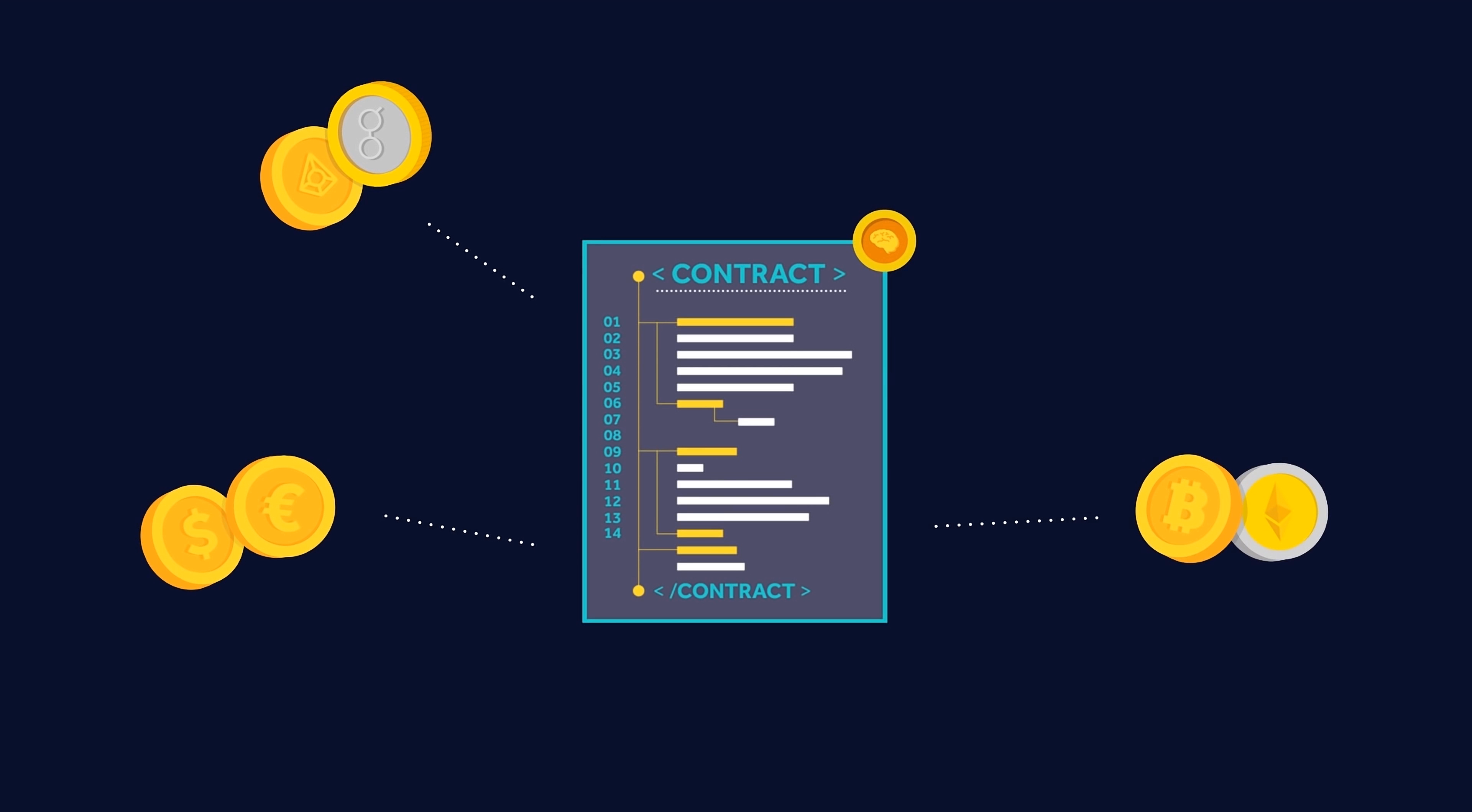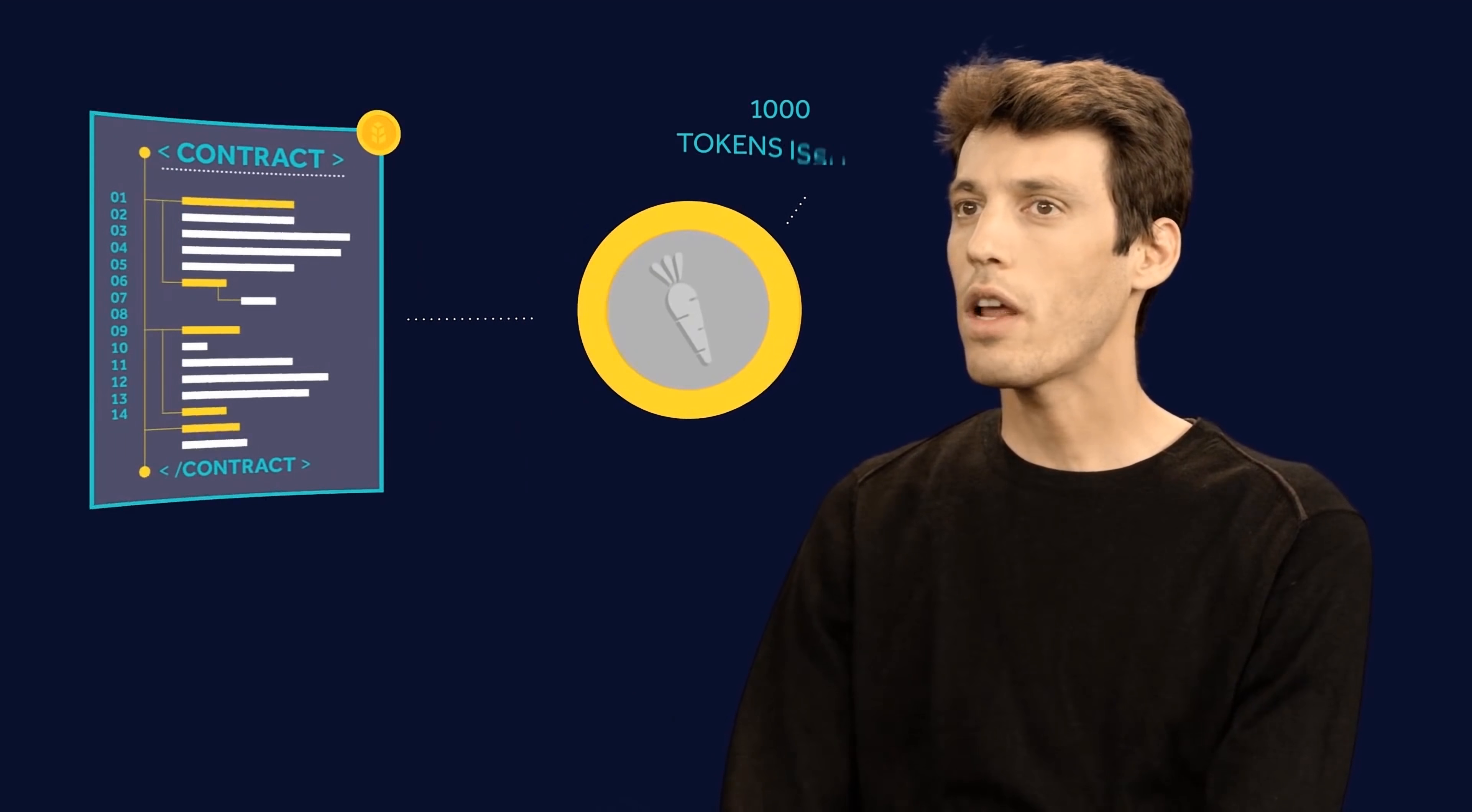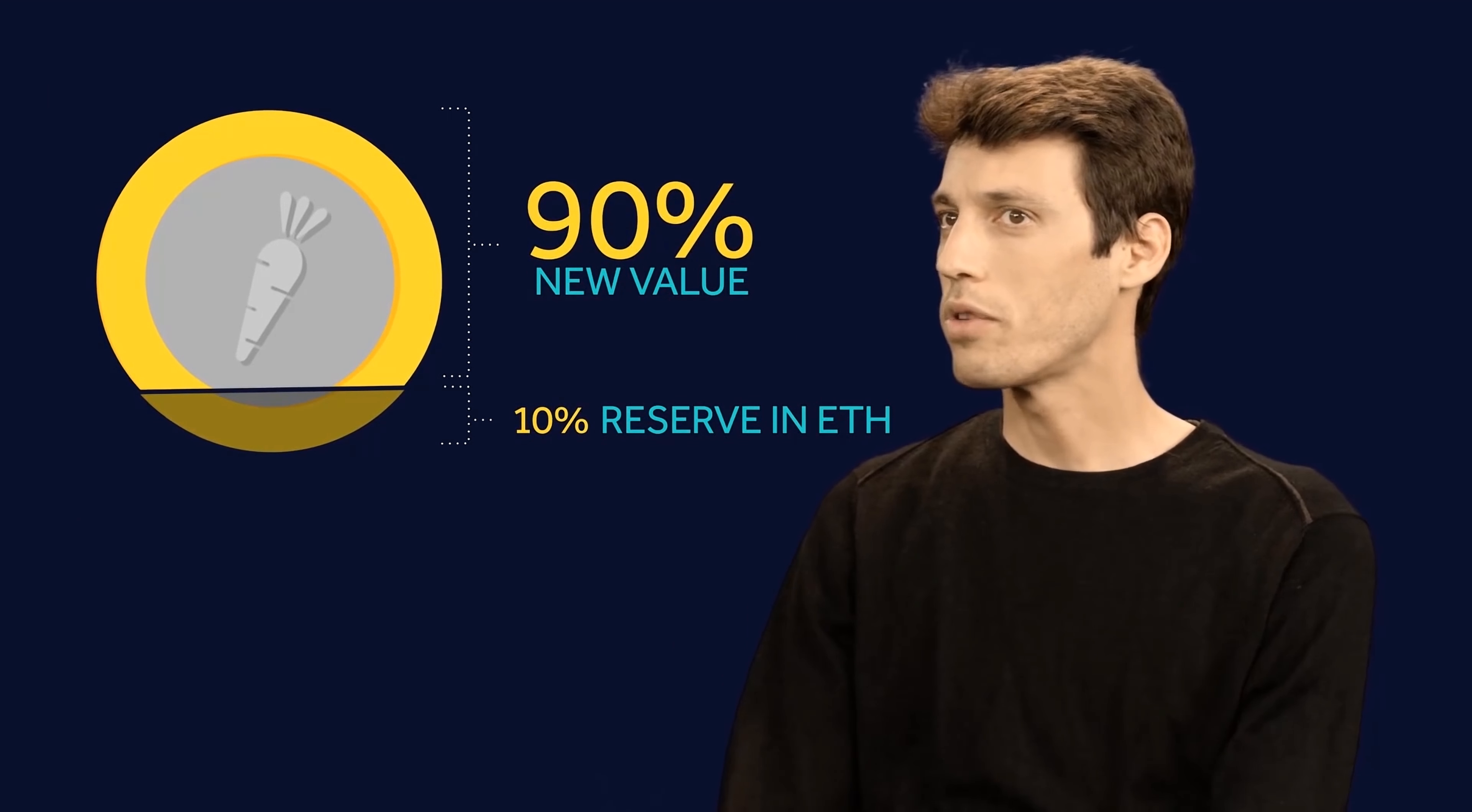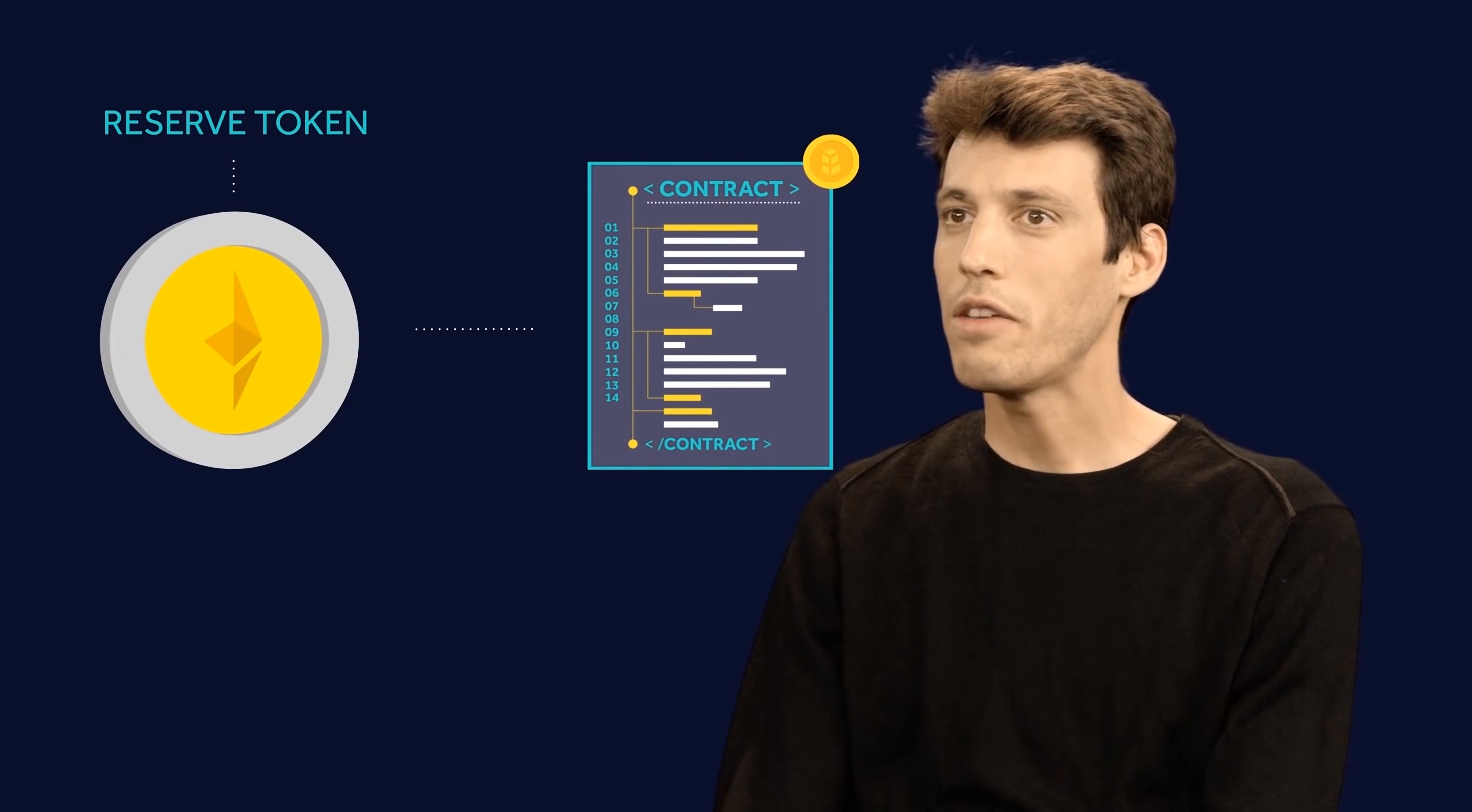Tokens represent assets like gold. The way that Bancor tokens work is that you can buy them at any time by sending any one of the reserve currencies to the smart contract which will then automatically issue you the token based on the reserve ratio. When you want to pull money out of the reserve, simply send the token back to the smart contract thereby destroying that token and pulling out money from the reserve.